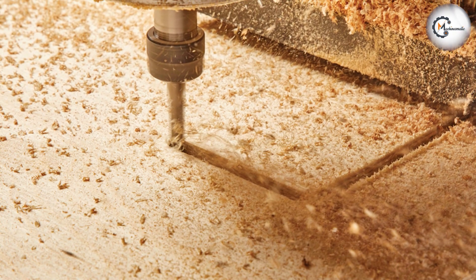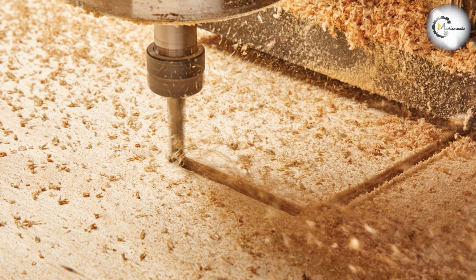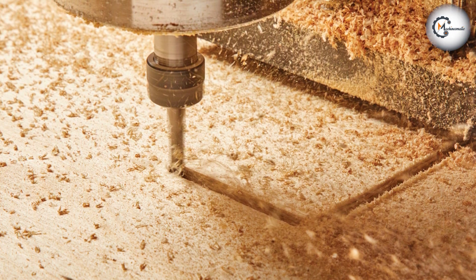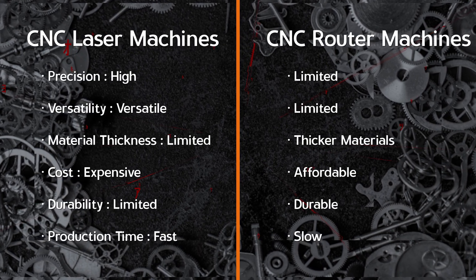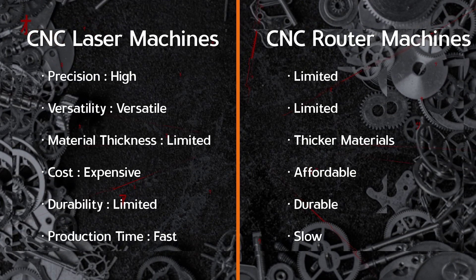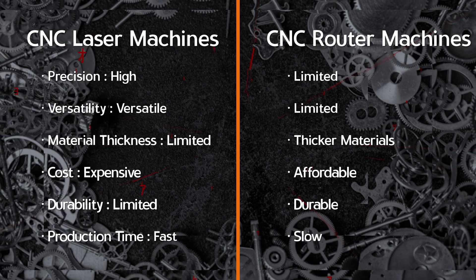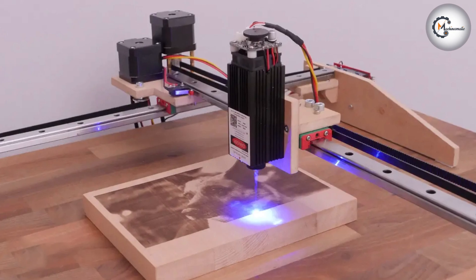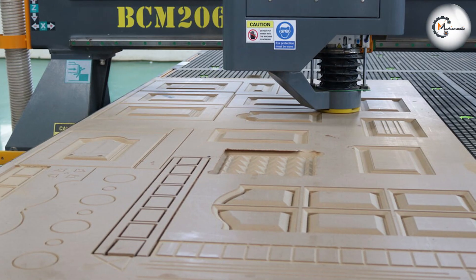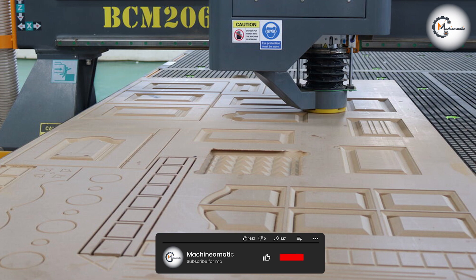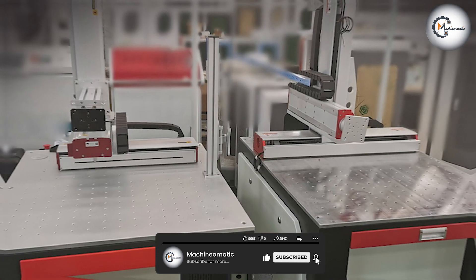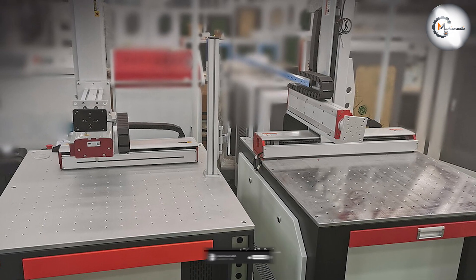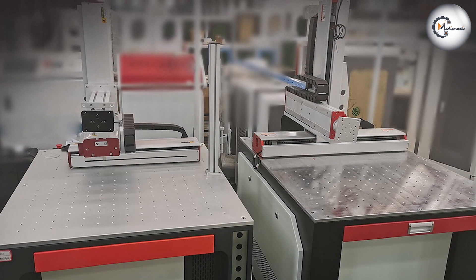This is because router machines require multiple passes to achieve the desired cut or engraving. When it comes to choosing between CNC laser and CNC router machines, the decision ultimately comes down to the specific needs of your business or project. Laser machines are ideal for applications that require high levels of precision and versatility, while router machines are better suited for projects that require thicker materials and durability. Ultimately, both machines have their advantages and disadvantages, and it's up to you to determine which one is the best fit for your needs.